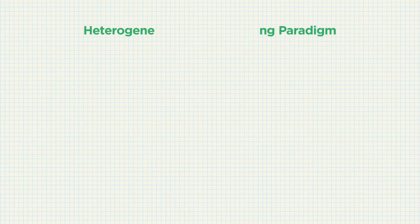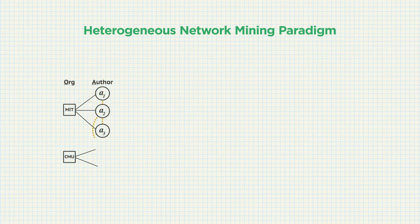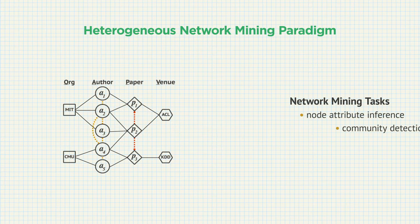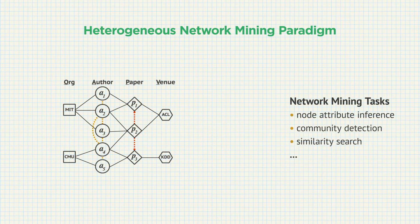Let's look at the conventional way of mining heterogeneous networks. Here we have a heterogeneous academic network that consists of multiple types of nodes and relationships, such as authors, their affiliated organizations, published papers, and publication venues. Given this network, we can consider various network mining tasks, such as predicting node attributes, detecting or clustering communities, and searching for similar nodes.